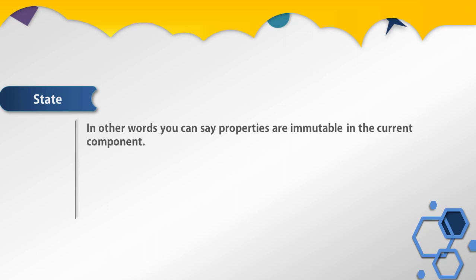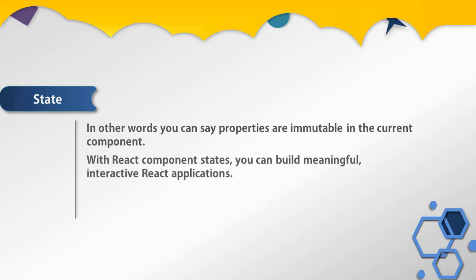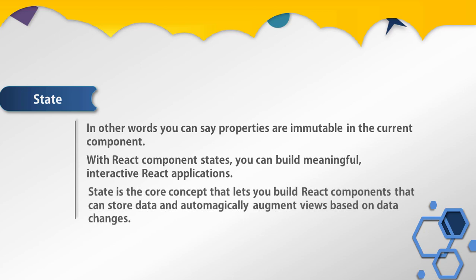This means if you want to change a property of a component, you need to extend that component and change its property, or you can just recall the component and change the property. So then how do you change the view if your properties are unchangeable? In this situation you have the state object. With React component state you can build meaningful, interactive React applications.